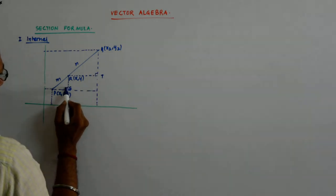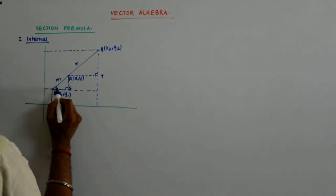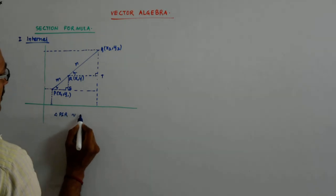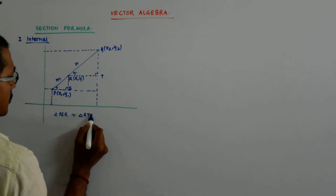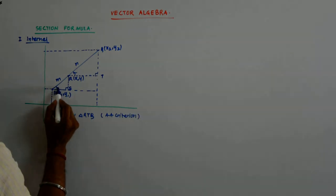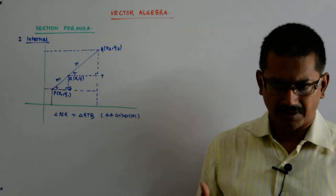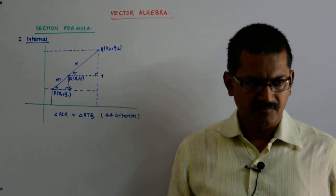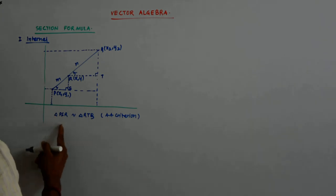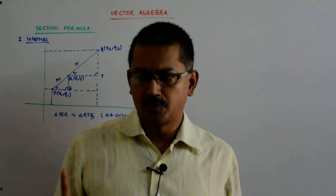This angle is 90 degrees obviously. Since PS is parallel to RT — they are all parallel to the x-axis — they are parallel to each other, so this angle is equal to this angle. Therefore triangle PSR is similar to triangle QTR. This angle equals that angle, and since two of the angles are equal the third has to be equal — that is where the triple-A criterion reduces to double-A criterion. If the triangles are similar, the corresponding sides become proportional.